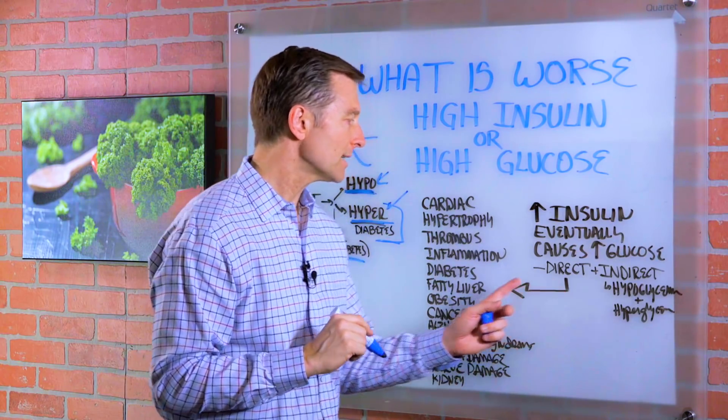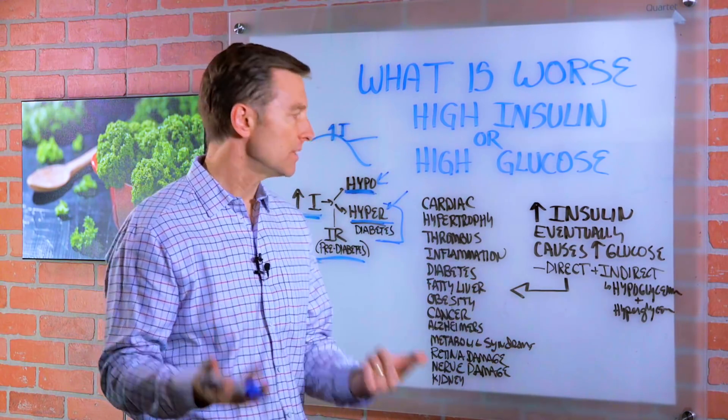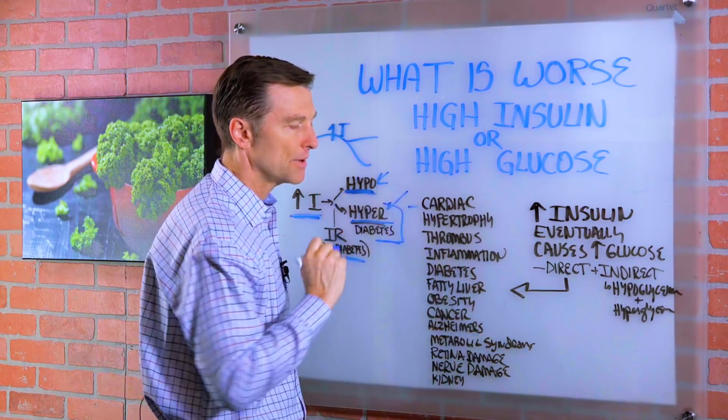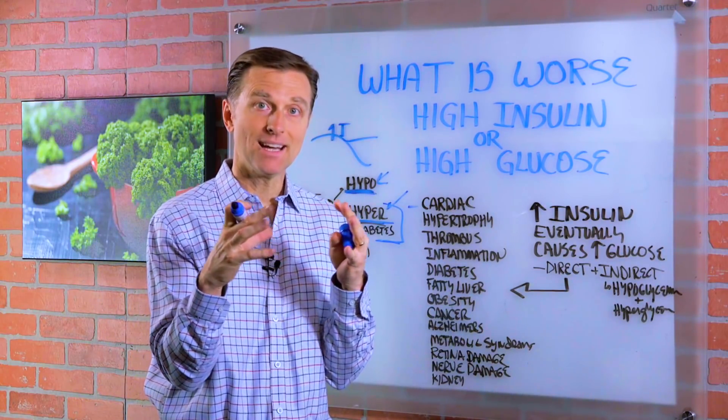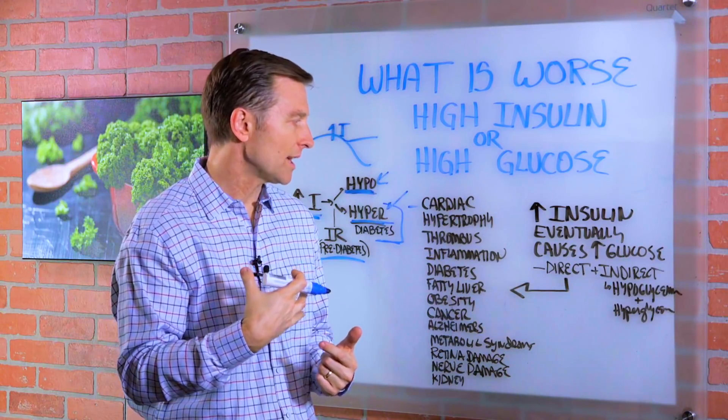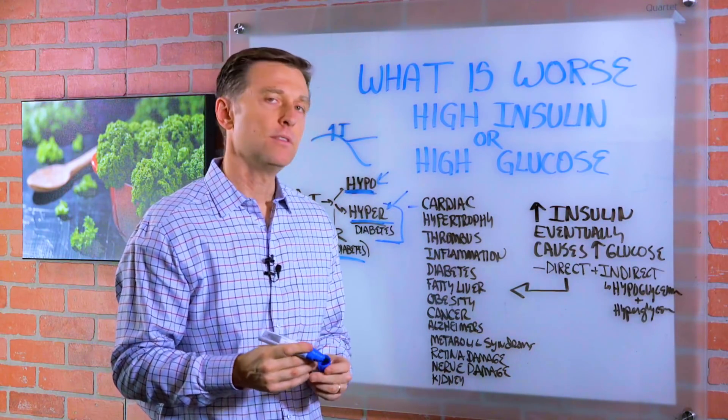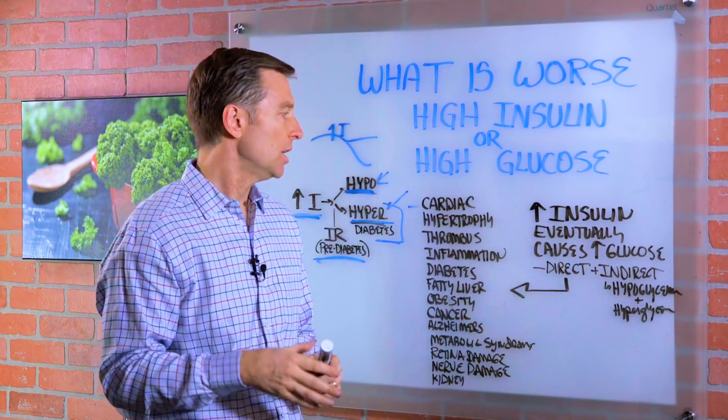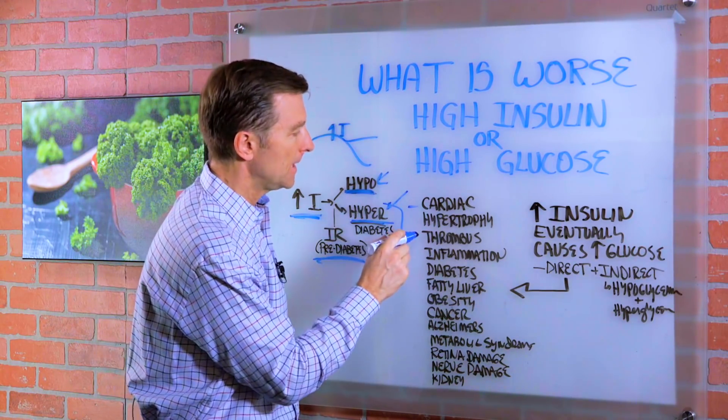So the direct side effects from having high amounts of insulin would be cardiac hypertrophy, where the cells of the heart actually get bigger, like in cardiomegaly, where the heart doesn't fit into the chest cavity anymore. That creates a lot of problems with the vessels and the valves and the actual work and function of the heart.